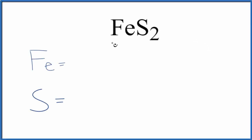Let's take a look at the number of atoms in FES2. This is pyrite, sometimes called fool's gold.